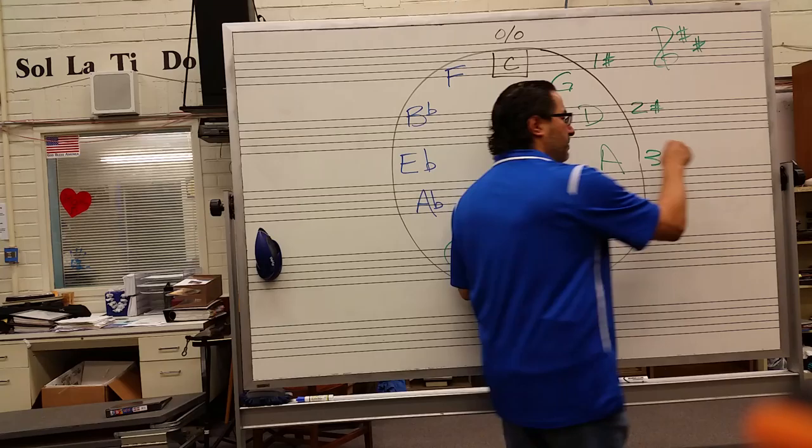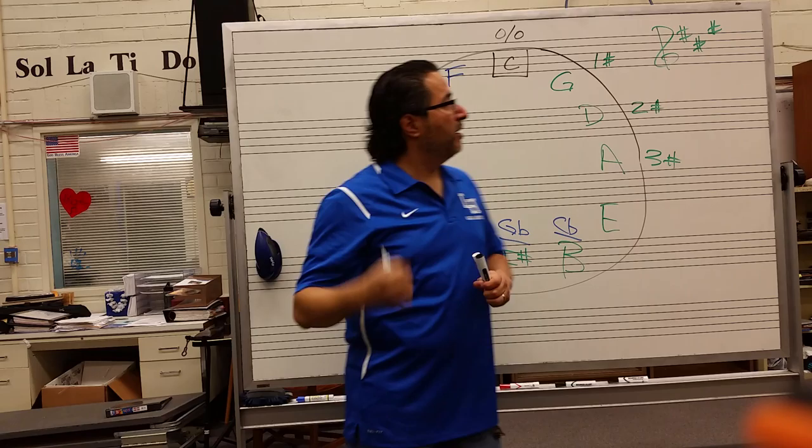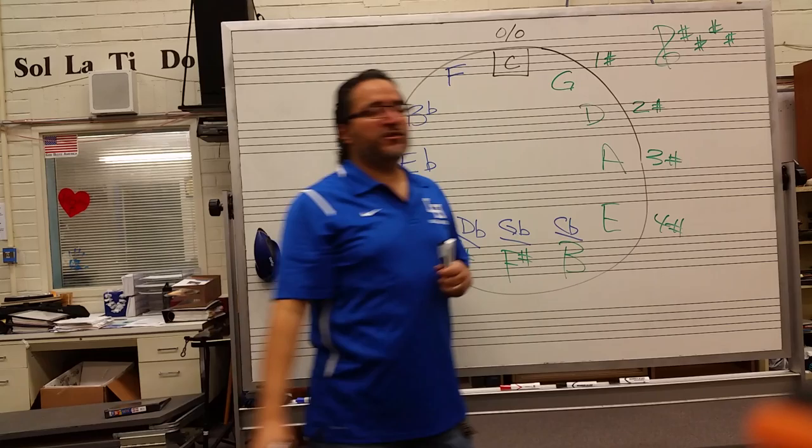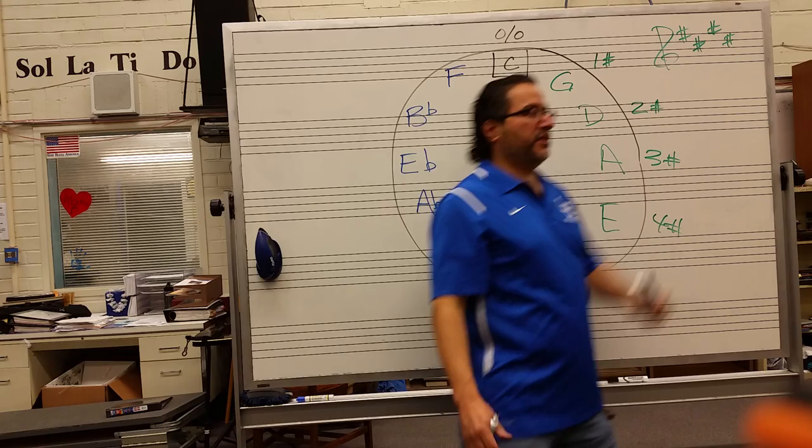We keep reviewing the order. Key of A has three sharps: F sharp, C sharp, G sharp — they come in that order. Key of E has four sharps: F sharp, C sharp, G sharp, D sharp. This order of sharps just continues as we learned in the other lesson.